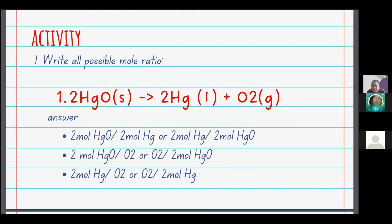The mole ratio is the ratio between the coefficients in a chemical reaction. Depending on the chemical equation, there will be many possible mole ratios — you can partner a reactant with another reactant, a product with a reactant, or a product with another product. The instruction is to write all possible mole ratios.